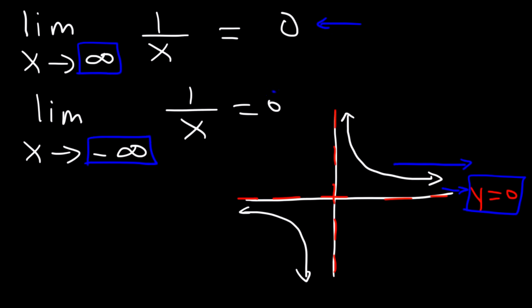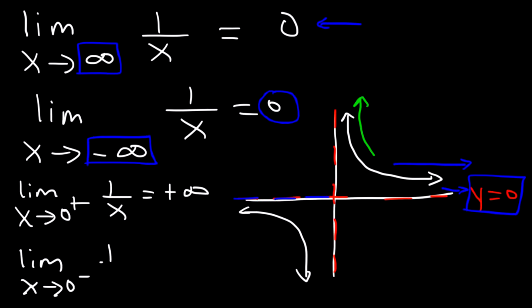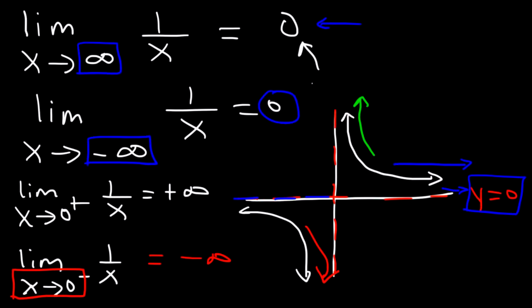This will also give you the horizontal asymptote on the left side, which is also y equals 0. As x approaches 0 from the right side, this will give us positive infinity — that tells you that 0 is a vertical asymptote. If you approach 0 from the left side, you're going to get negative infinity. The x value that leads to a y value of infinity is the vertical asymptote. When x approaches infinity, the y value corresponds to the horizontal asymptote.